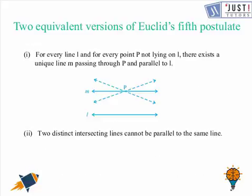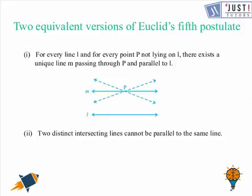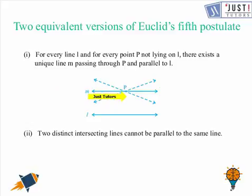There are also two equivalent versions of Euclid's fifth postulate. The first says: for every line l and for every point p not lying on l, there exists a unique line m passing through p and parallel to l. Looking at the diagram, that's line l, point p not on l, and the unique line m parallel to l. The second equivalent version says: two distinct intersecting lines cannot be parallel to the same line.